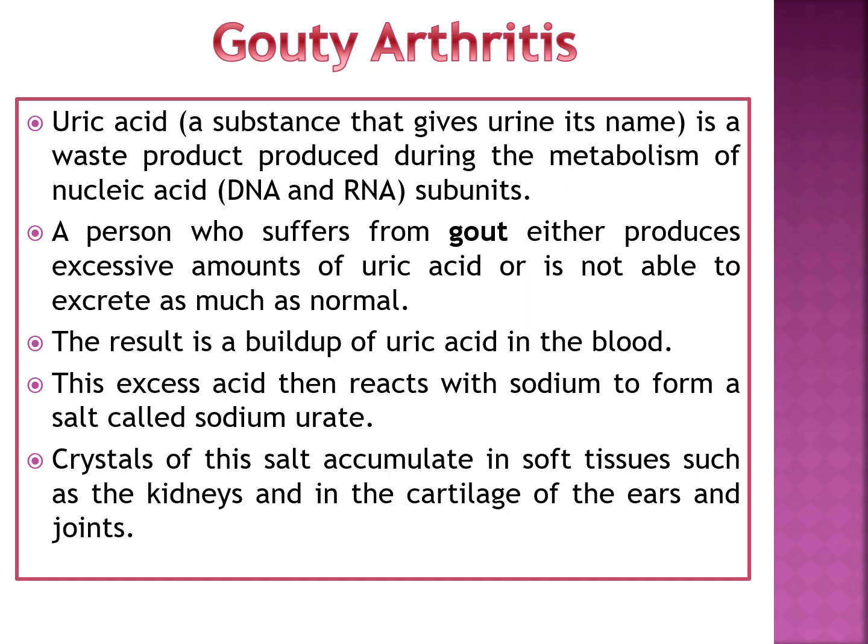The next disorder is gouty arthritis. Gout results from the accumulation of uric acid crystals. Uric acid is a waste product produced during the metabolism of nucleic acid subunits — that is, DNA and RNA. A person who suffers from gout either produces excessive amounts of uric acid or is unable to excrete as much as normal. The result is a buildup of uric acid in the blood, which then reacts with sodium to form a salt called sodium urate. Crystals of this salt accumulate in soft tissues such as the kidney and in the cartilage of the ears and joints.